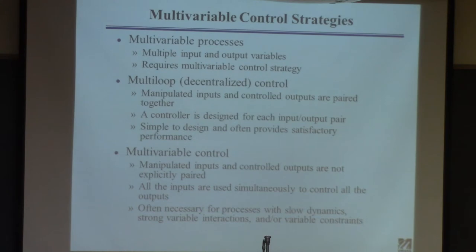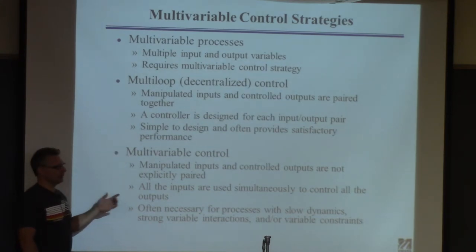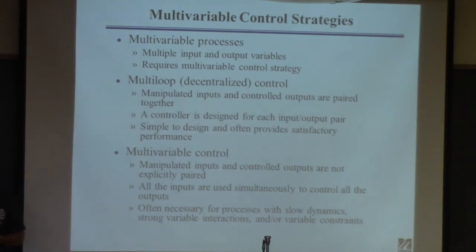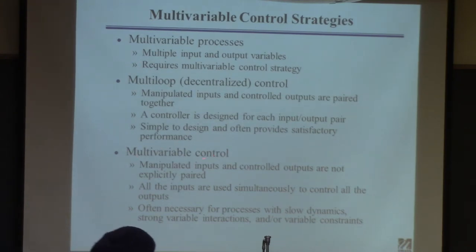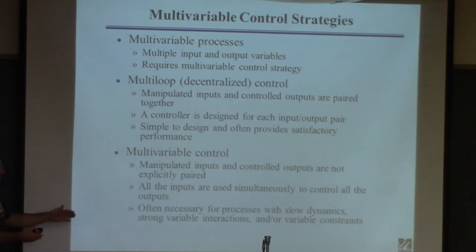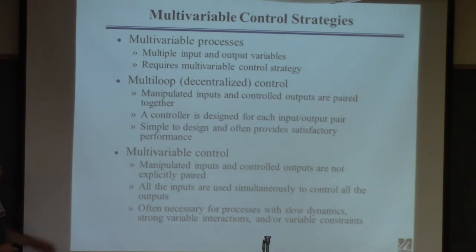If you go into industry, there are two dominant technologies to do this. One is from Aspen Technology — you know those guys because they make Aspen. They have a technology called dynamic matrix control; like any good company, they just bought another company that developed it. This is the standard for this kind of technology in industry. Honeywell also has a package that they sell.